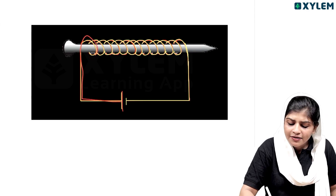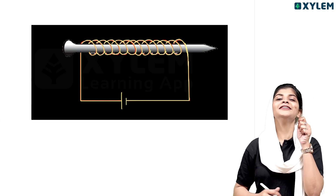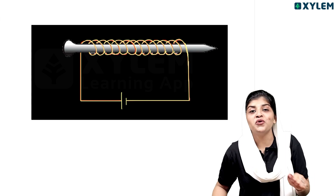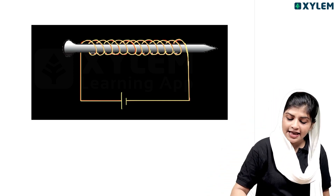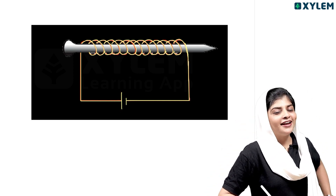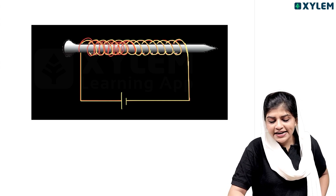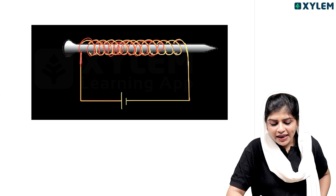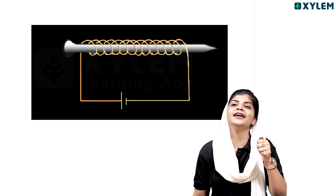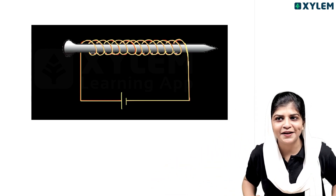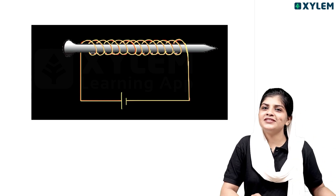So, this arrangement is known as an electromagnet. An electromagnet is the power that we have to work with. The main thing is that we have to work with this magnet.